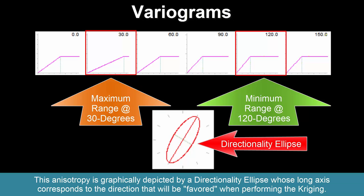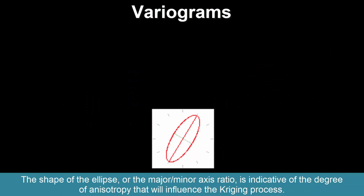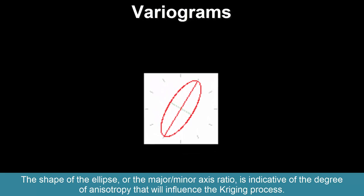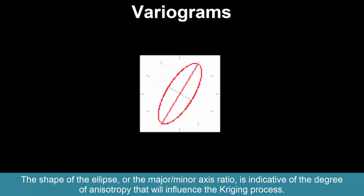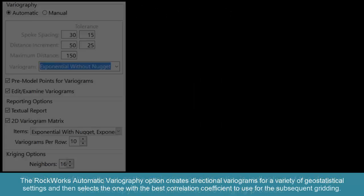This anisotropy is graphically depicted by a directionality ellipse whose long axis corresponds to the direction that will be favored when performing the Kriging. The shape of the ellipse, or the major-minor axis ratio, is indicative of the degree of anisotropy that will influence the Kriging process.